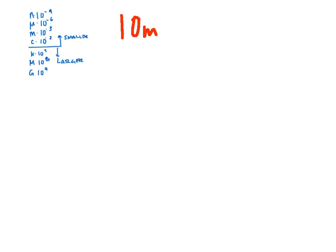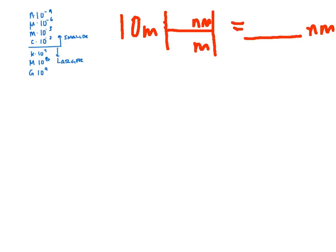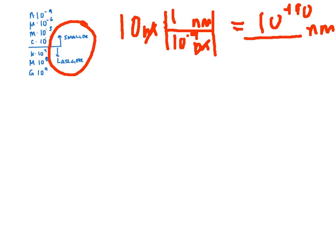Let's say we have 10 meters and we want to find out how many nanometers that is. We're going to multiply by our conversion factor. I need a meter on the bottom and a nanometer on the top, so meters cross out and it leaves me with nanometers. One nanometer is 10 to the negative 9th meters, so I take 10, divide it by 10 to the negative 9th, and that gives me 10 to the positive 10 nanometers. By looking at what's smaller and larger, we can mentally check our answers.